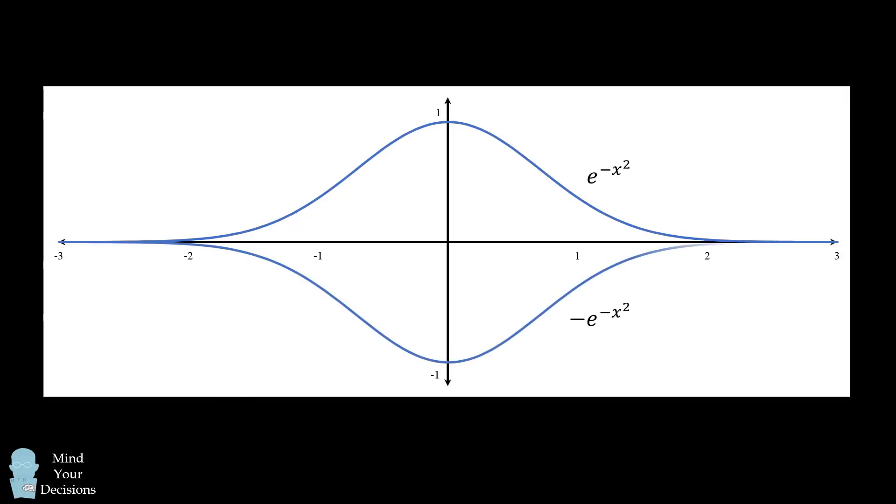Let's first plot the curves. We have the positive bell curve y equals e to the power of negative x squared and then we have the negative bell curve.